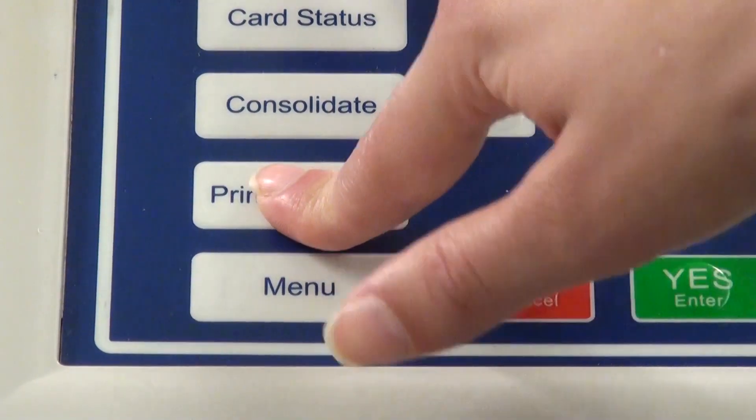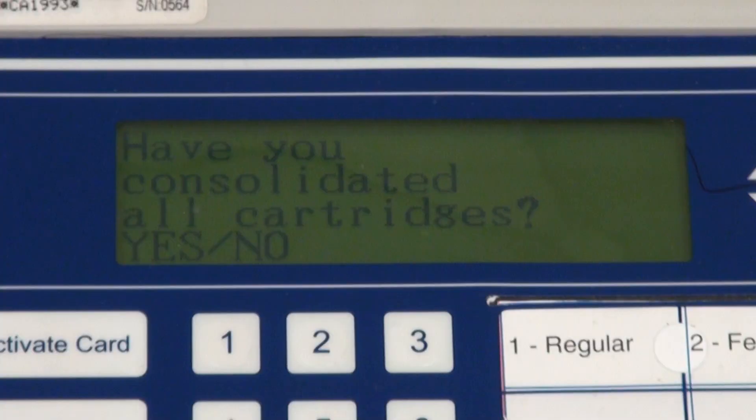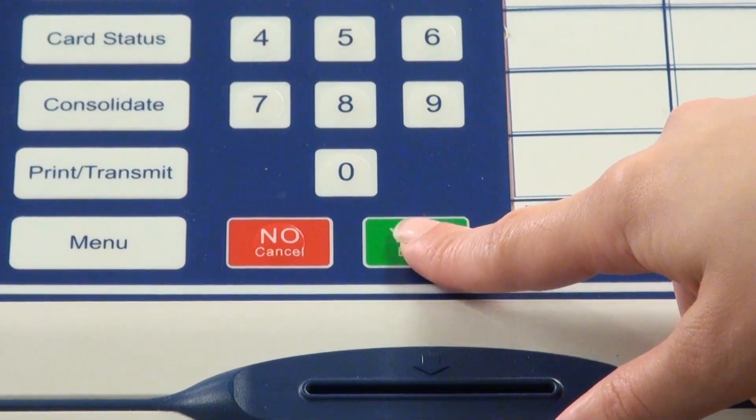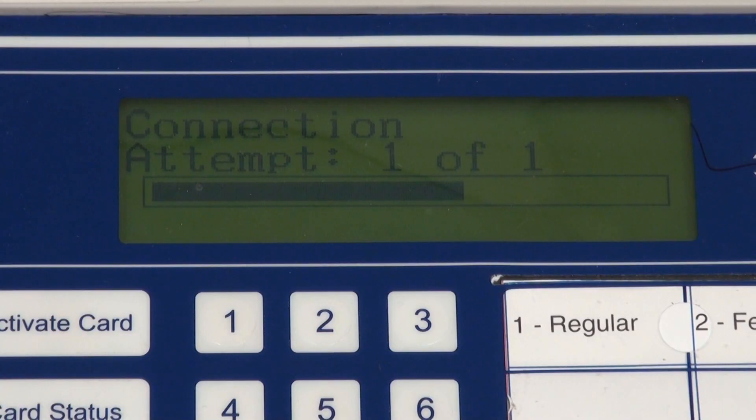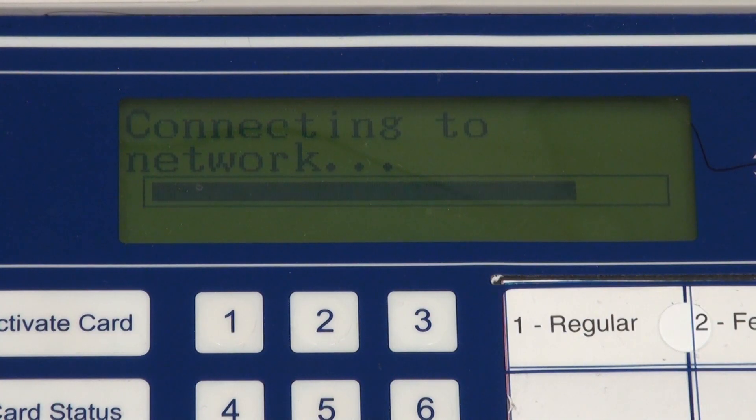Press the print transmit button. The unit will ask, have you consolidated all cartridges? Press yes if you're ready. The unit will attempt to transmit the results. When finished transmitting, a screen will read results transmitted transmit OK.